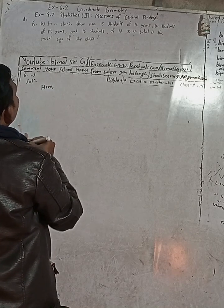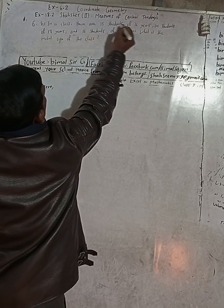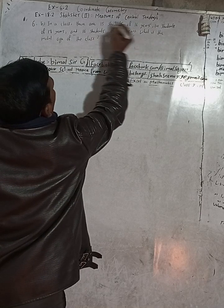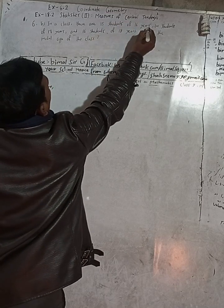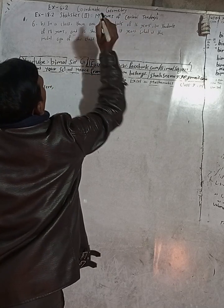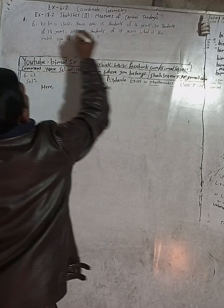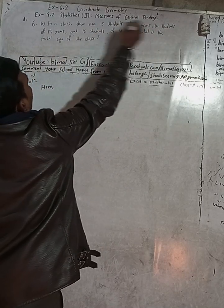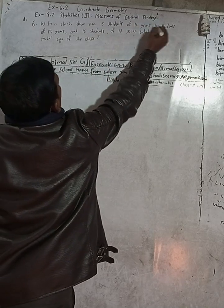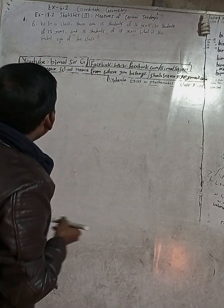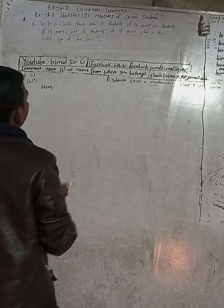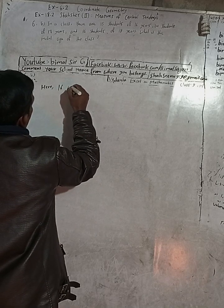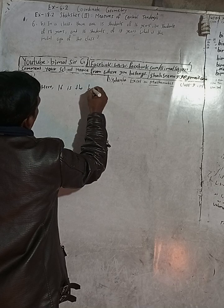Here we can see there are 15 students of 16 years, so the frequency for 16 years is 15. There are 14 students of 17 years, and 16 students of 18 years. So which is highest — 15, 14, or 16? So 16 is the highest frequency.